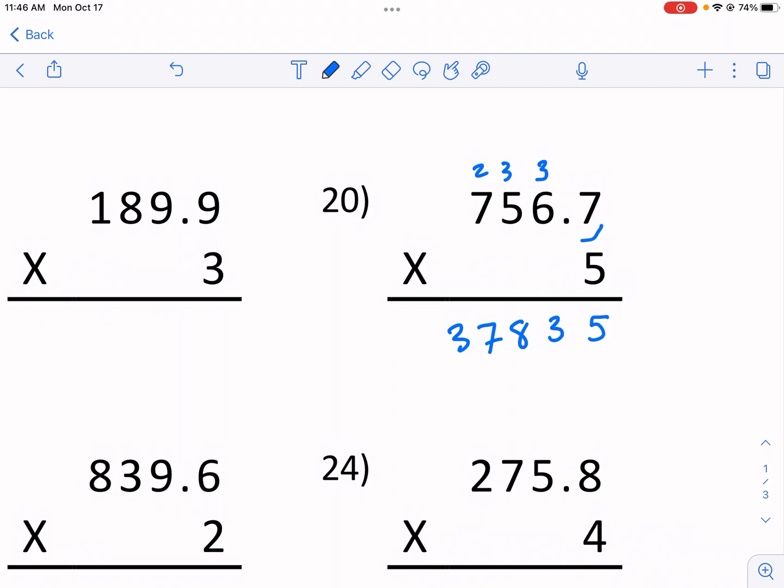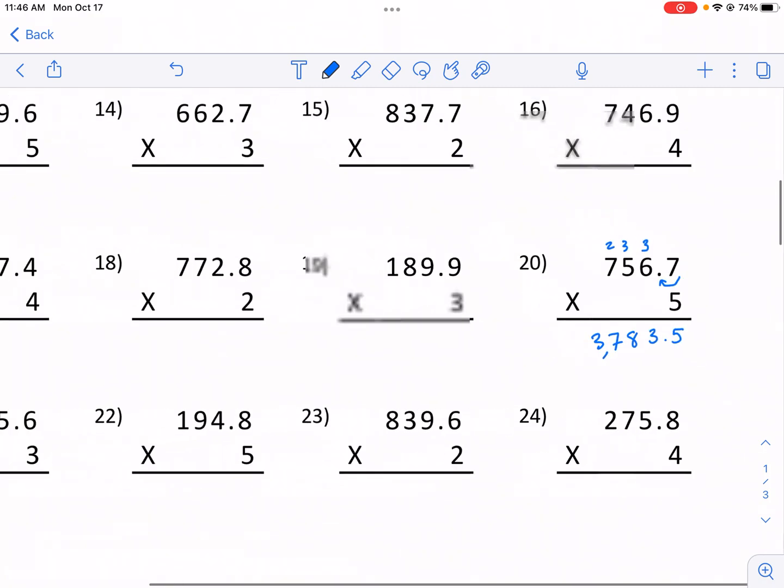We need to move over this decimal place one time. One time because that's how many decimal places in total there are moved over. So now our new answer is 3,783.5.